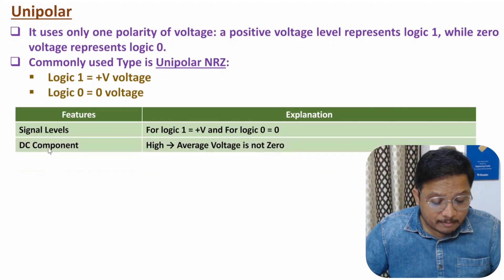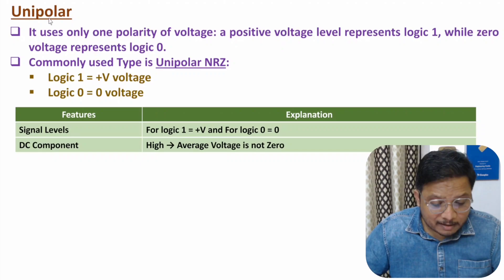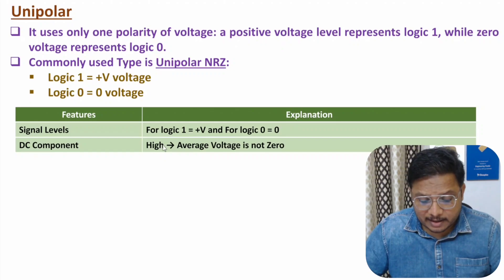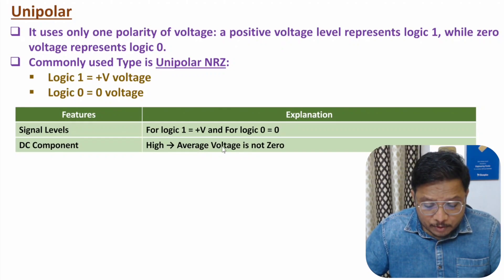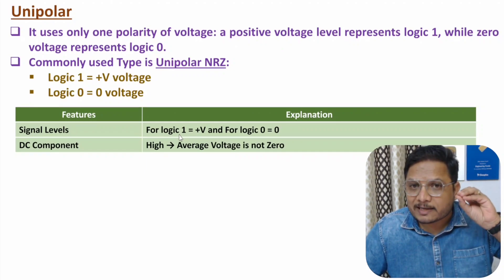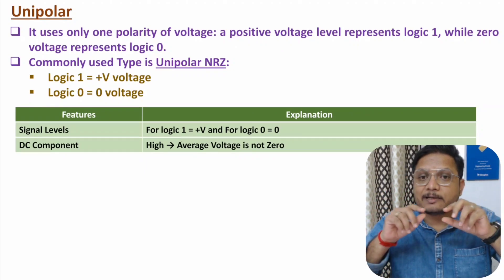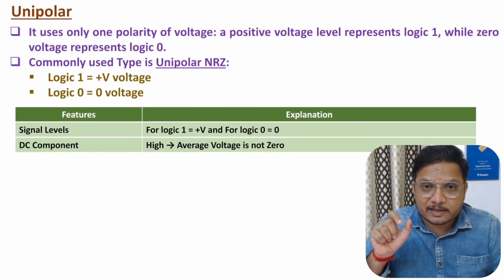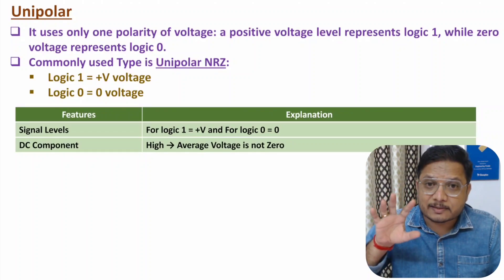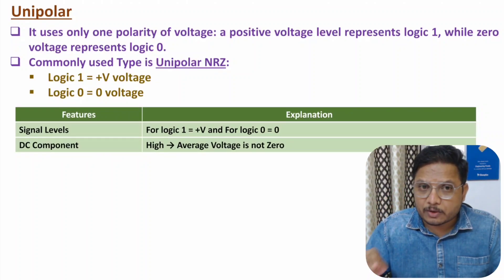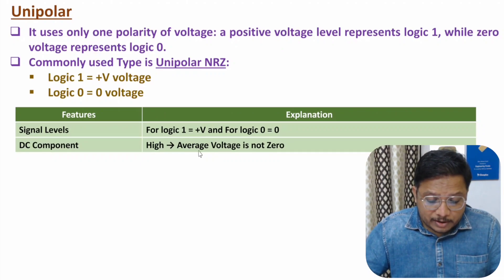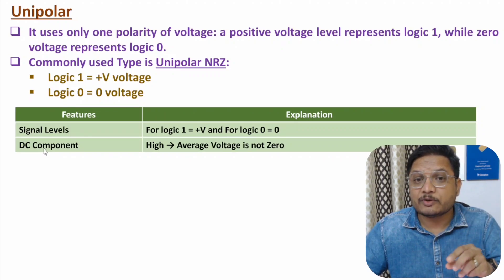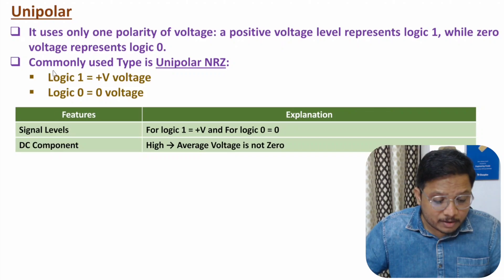If you talk about DC component, then obviously with the unipolar pulse shaping technique we have a high DC component. The reason is here we will be having an average voltage due to logic one. If we consider five zeros and five ones, the average will be half of the voltage — with five zeros we have zero voltage and with five ones we have V voltage, so average will be V by two. So there will always be a DC component, and ideally DC component should be zero. So that is the disadvantage of unipolar.